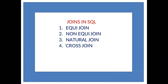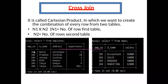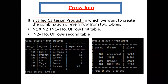The first and very simple join is the cross join. What is the cross join? This is also known as the Cartesian product. In this join, we want to create a combination of every row from two tables.